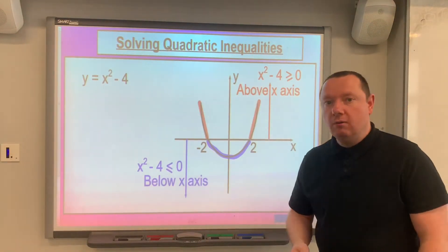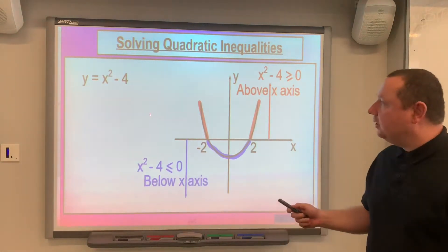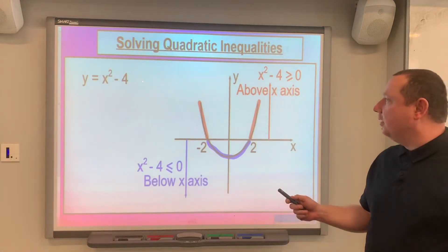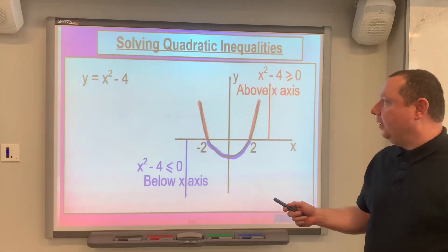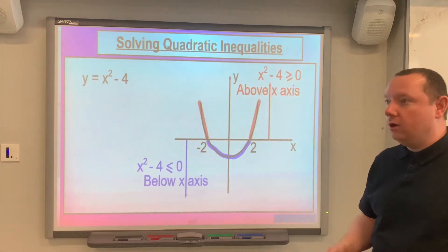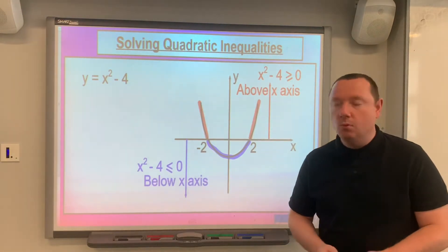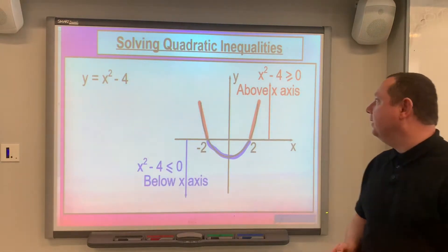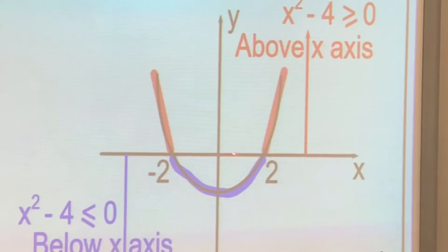If you look on the board at the moment, you'll notice that I've drawn the graph of y equals x squared minus 4. Quite a simple quadratic. This is what it looks like.